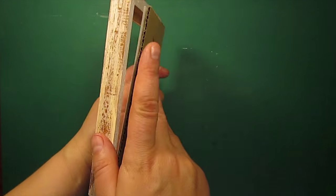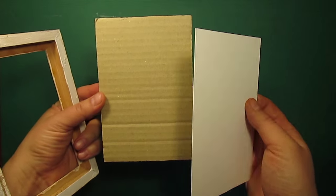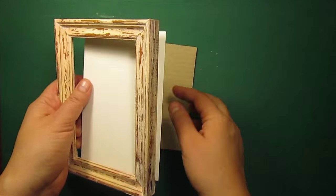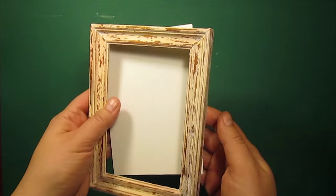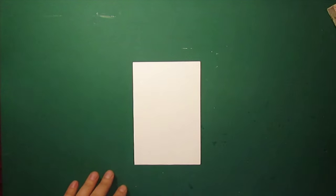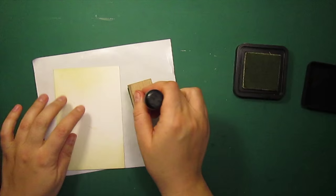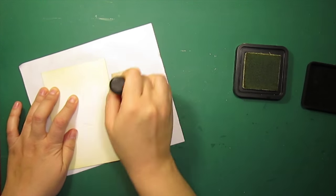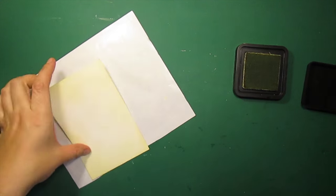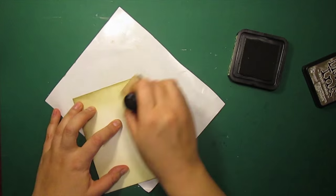I have cut a piece of cardstock and another piece of packaging card to the size of the frame. Now I'm going to distress the edges. I'm using the antique linen first, then I'll be using the frayed burlap and finally the vintage photo.